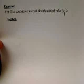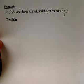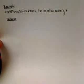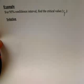In this example, we're going to find the confidence interval for a 95% confidence interval, find the critical value, or also known as z with a subscript alpha over 2.